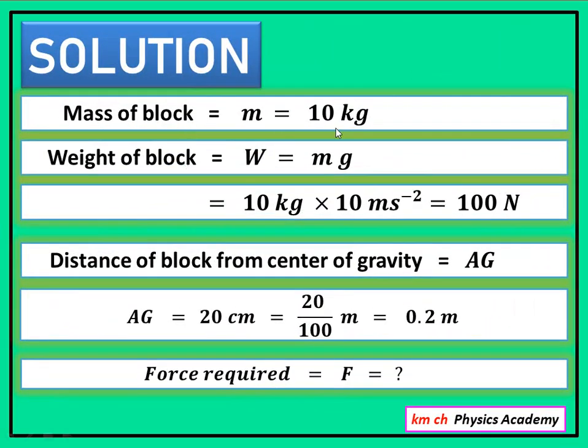Mass of block M is 10 kg. Weight of block W is equal to Mg. Mass is 10 kg and g value is 10 meter per second square so this is 10 into 10 equals 100 kilogram meter per second square that is newton. So weight is 100 newton hanging. Distance of block from center of gravity is AG and that is 20 centimeter. We will convert it to meters so 20 divided by 100 becomes 0.2 meter. Force required F we have to find.